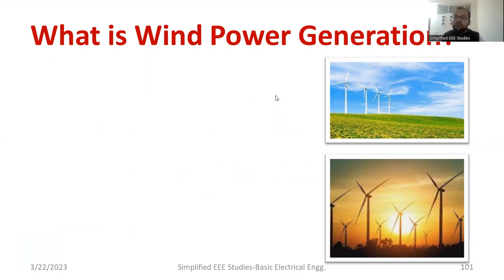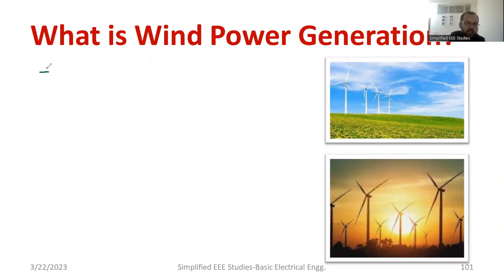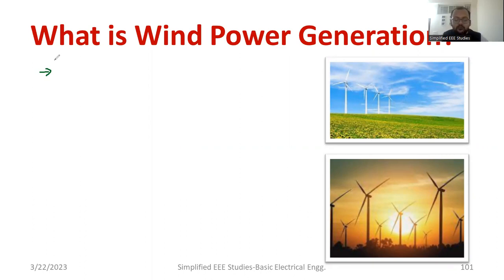Let us first discuss what is the meaning of wind — what is wind and how the wind is formed. Wind is the approximate horizontal and vertical movement of air, which is caused by the differential heating of Earth's surface.